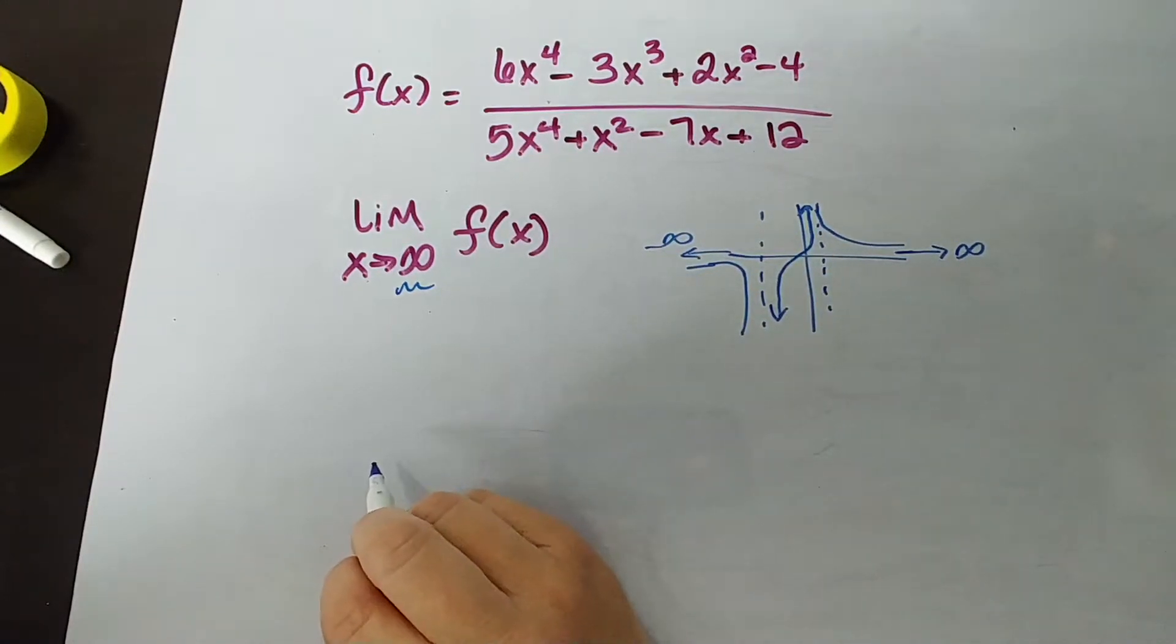So, the extremely large values of x - millions, tens of millions, hundred millions. What is this function approaching? What is the behavior of the function as x gets increasingly large?